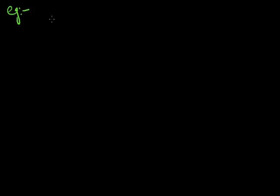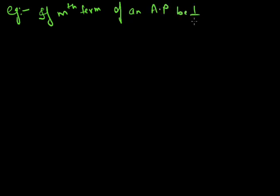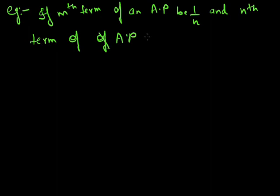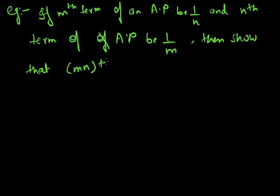Till now we have seen what is arithmetic progression, how to find the nth term of an arithmetic progression, and we have also seen some examples of finding the nth term. Let's take one more example: if the mth term of an AP is 1/n and the nth term of an AP is 1/m, then show that the mnth term of the same AP is 1.